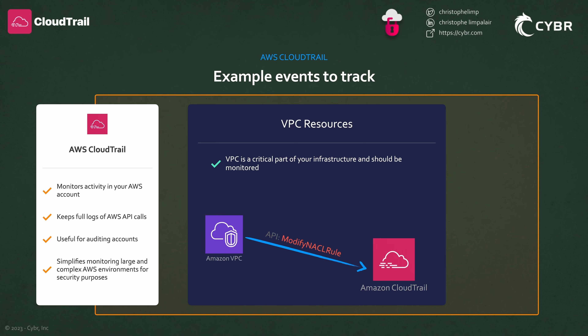Apart from security groups, it is important to keep track of several changes that may occur in your VPCs and can potentially have a security impact. Unauthorized changes to NACLs and route tables could be indicators of compromise. Even if they're made on purpose, changes like these can have a negative impact on the security posture of your AWS environment, and so you should definitely keep an eye on those changes. These are just a handful of practical examples, but as we will see in this course, there are many more applications. Now that we've gotten an overview of what CloudTrail is, how it works, and when it's useful, we're ready to move on to the next lesson.